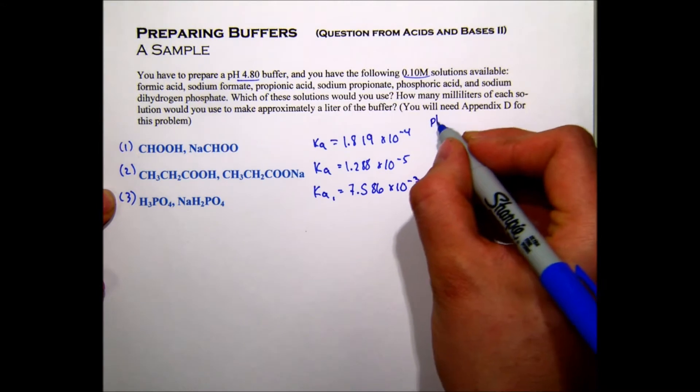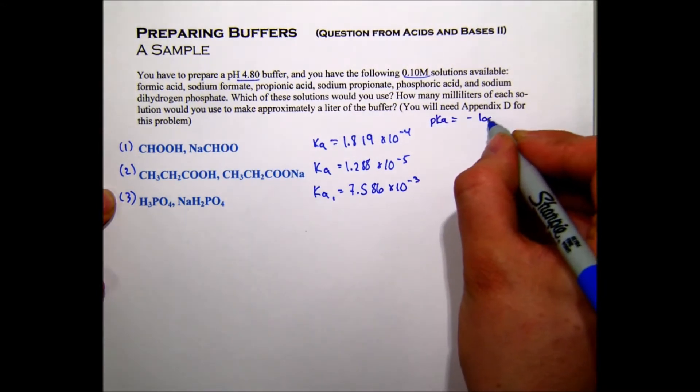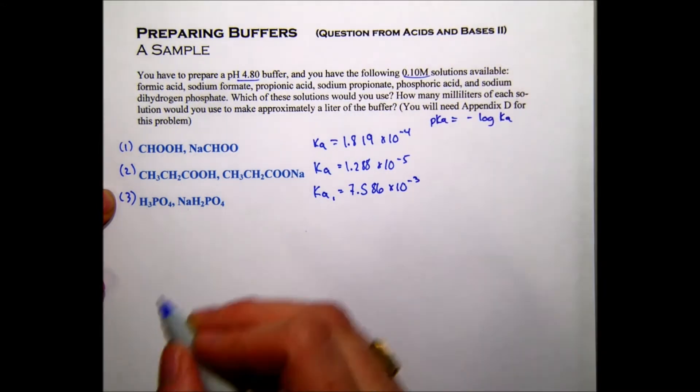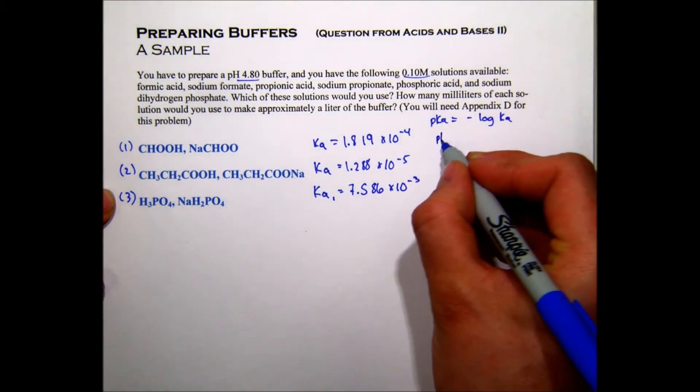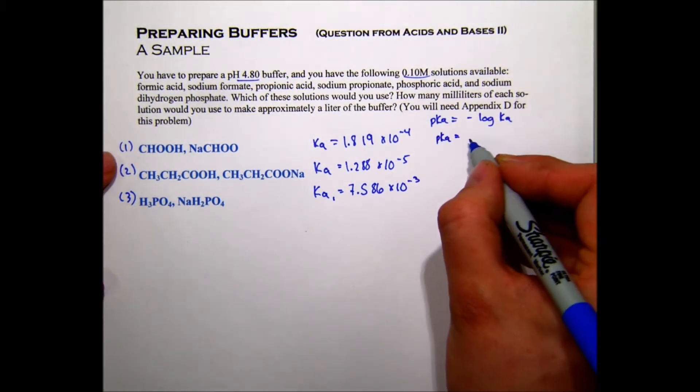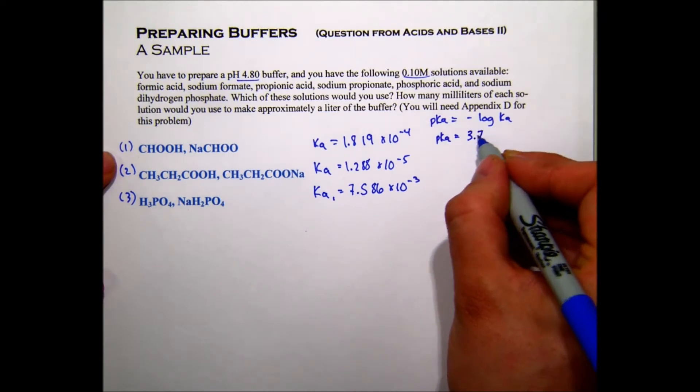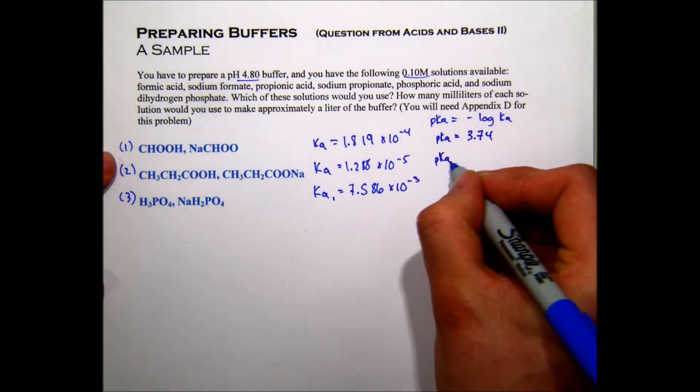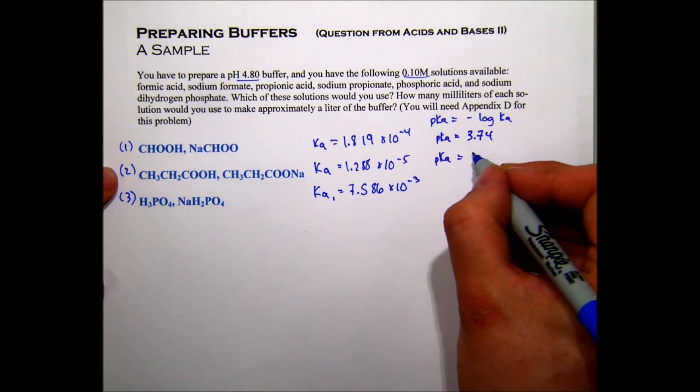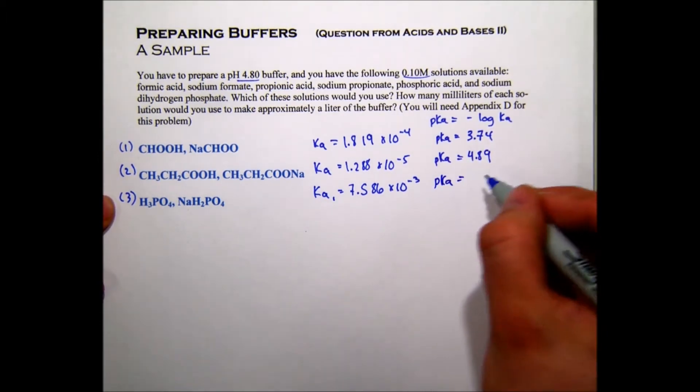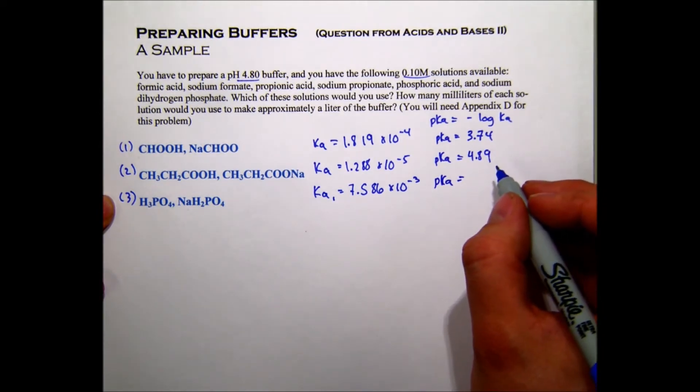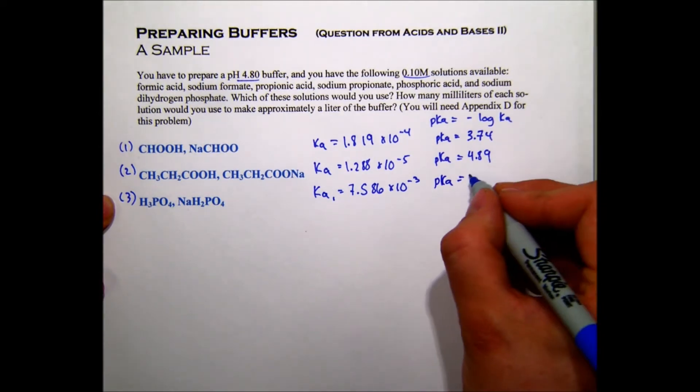So we know that the pKa is equal to the negative log of the Ka for each one of these. So I'll include that calculation. The pKa for formic acid is 2.74. The pKa for propanoic acid is 4.89. And the pKa for the first proton on phosphoric acid is 2.12.